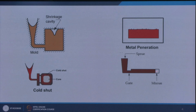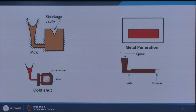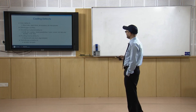Looking at defects like misrun or cold shut: the liquid metal has not been able to go up to a certain level — that is misrun. Similarly, metal coming from both extremes, if not able to properly fuse, is a defect known as cold shut.